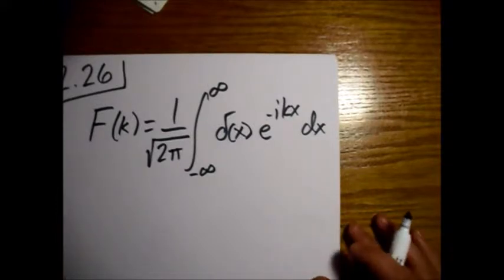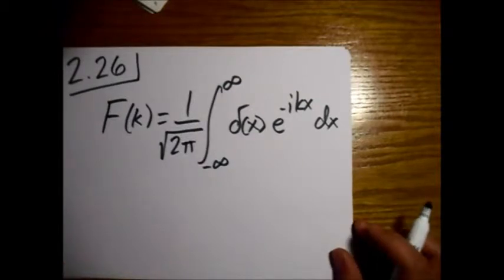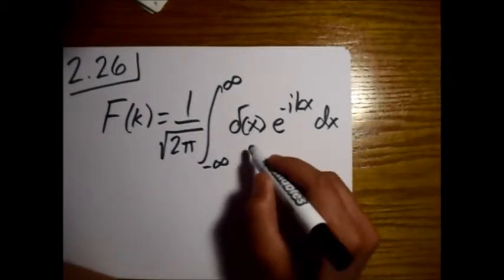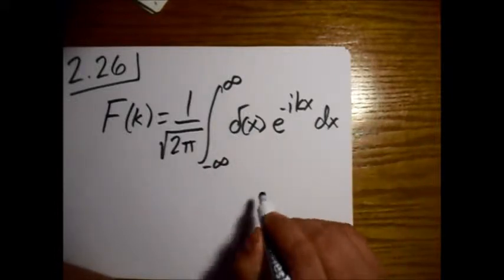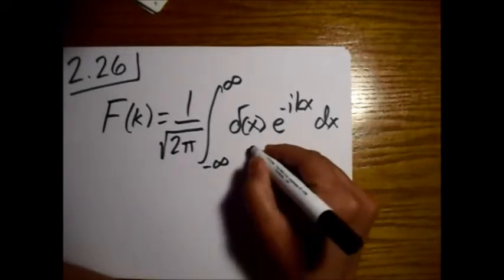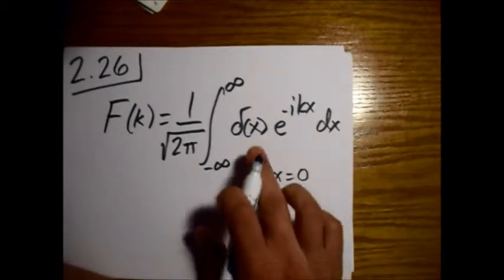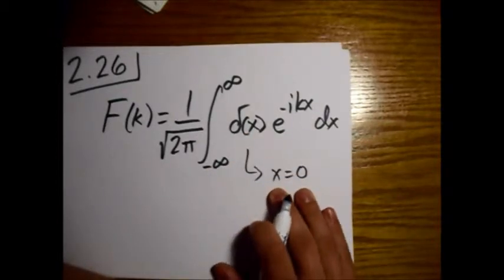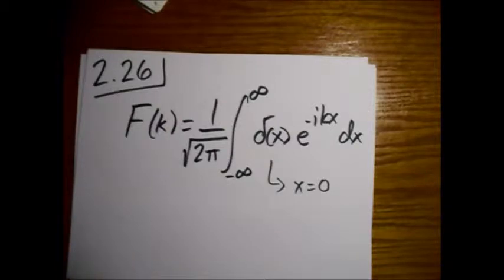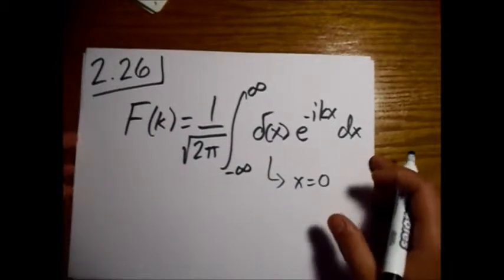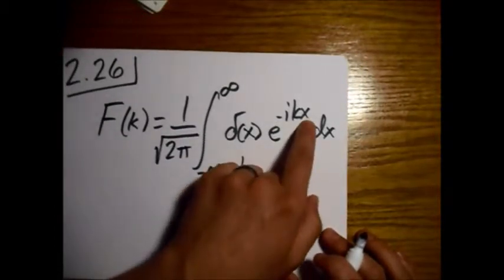Alright, so just like with integrating over a Dirac delta function, we say where is this equal to infinity rather than 0, right? And that's at x equals 0. Okay, so this Dirac delta function is non-0 when x equals 0. And we ask, is this point within our limits of integration? And it is between minus infinity and infinity. So the only point that's going to count for us is when x equals 0.